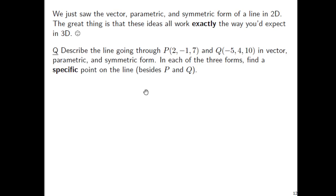Let's describe the line going through the points P and Q in vector, parametric, and symmetric form. And in each of the three forms, we can find a specific point on the line besides the two points that we should know are P and Q.